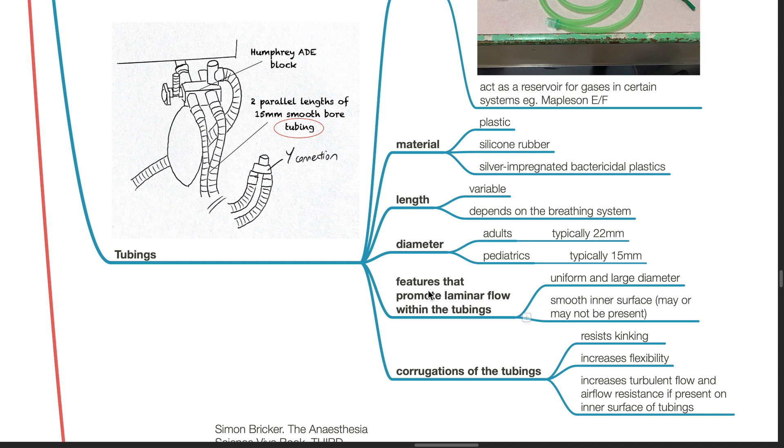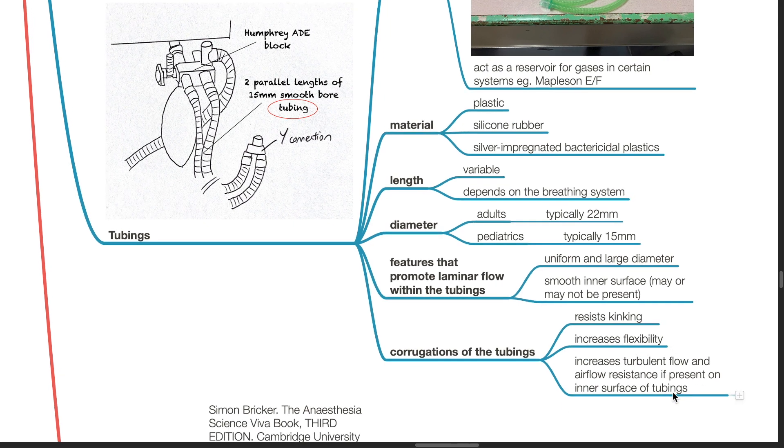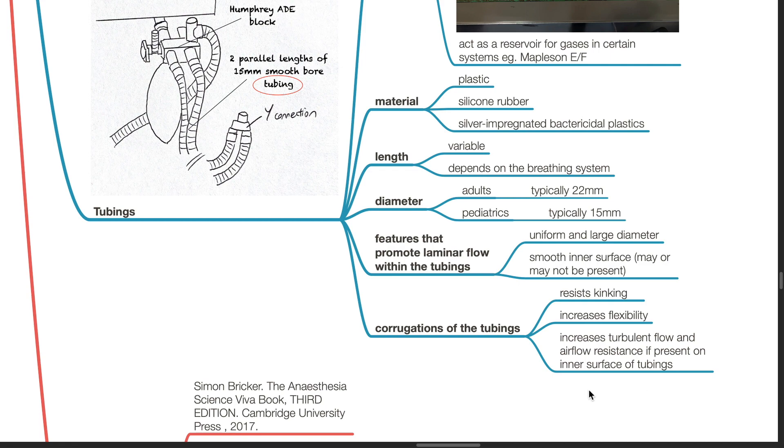Features that promote laminar flow within the tubings: uniform and large diameter, smooth inner surface. Corrugations of the tubings resist kinking, increases flexibility and increases turbulent flow and airflow resistance if present on inner surface of the tubings.